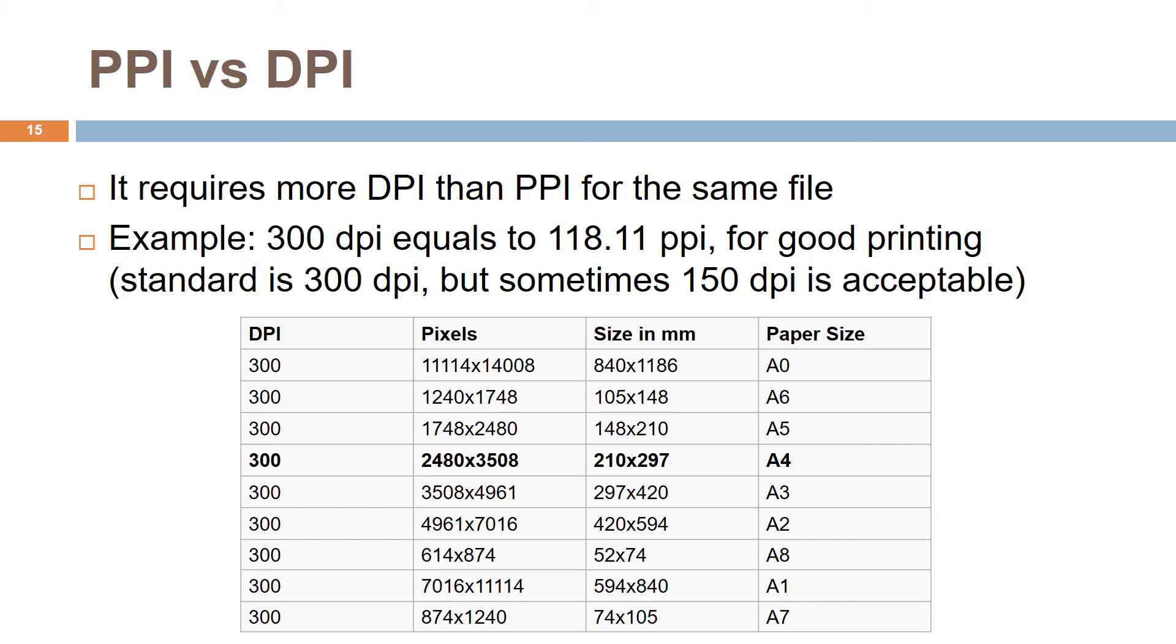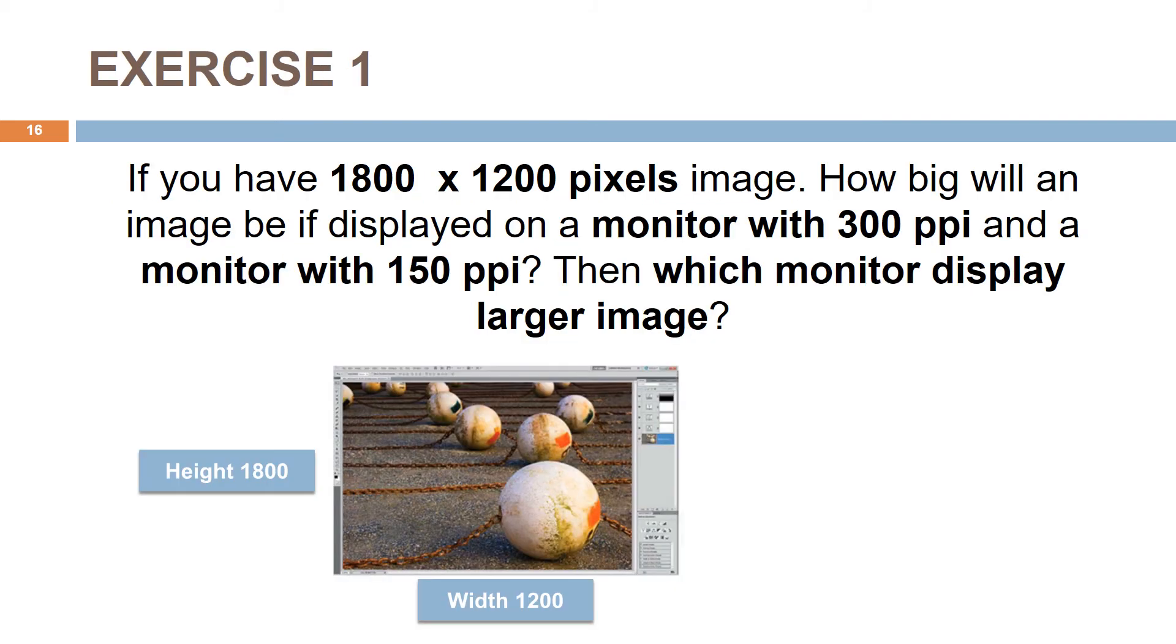Otherwise, you will print a blurry image. This table guides you to choose suitable print area, the paper size, for good printing quality. So now let's do some exercises. If let's say you have 1800 x 1200 pixels image, find out how big will an image be if displayed on a monitor with 300 PPI or 150 PPI.